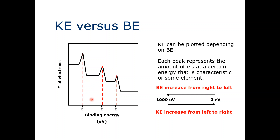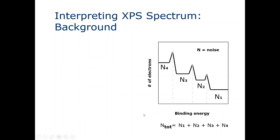The binding energy increases from right to left — if you move from here to here, from right to left, the binding energy increases. On the other side we have kinetic energy, which increases from left to right. So how do we interpret the XPS spectrum? For that we have to go into the background of XPS analysis.